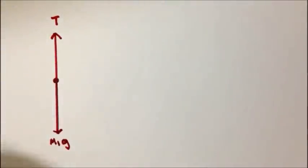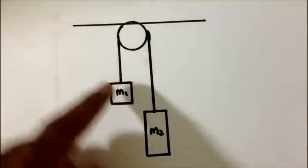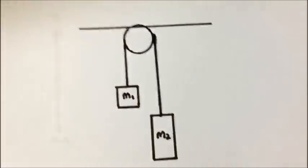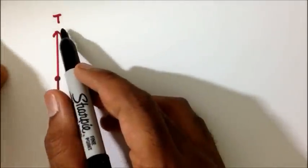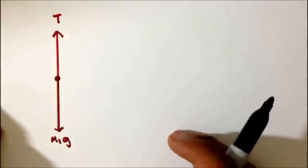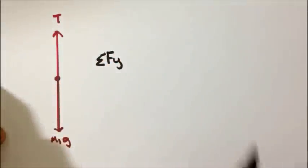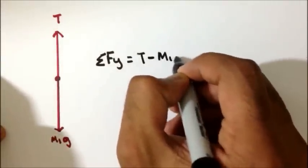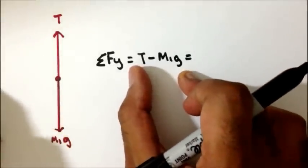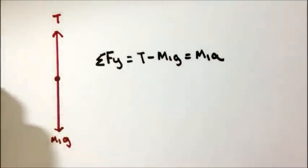I will write Newton's second law in the y-direction. We said that if the system tends to accelerate clockwise, it will be positive — so up is positive and down is negative for mass M1. Tension T is applying a force to M1 with a tendency to accelerate it upward, or clockwise. So the sum of forces in the y-direction is equal to T minus M1g, which equals mass times acceleration: T − M1g = M1a.